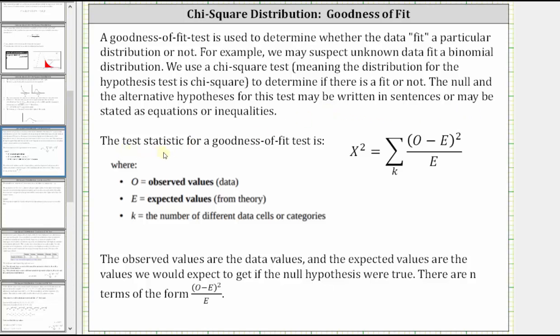The test statistic for a goodness of fit test is chi-square given by the formula shown here, where we have the sum of k terms in the form of the square of O minus E divided by E, where O equals the observed values, E equals the expected values, and k equals the number of different data cells or categories.